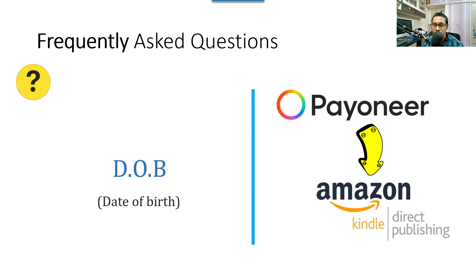Next question: what about date of birth? To apply for a Payoneer account, you must be 18 years old or above. Use your date of birth exactly as listed on your government-issued ID. If you're using a PAN card, make sure your date of birth matches that supporting document — any mismatch will cause issues in the approval process.